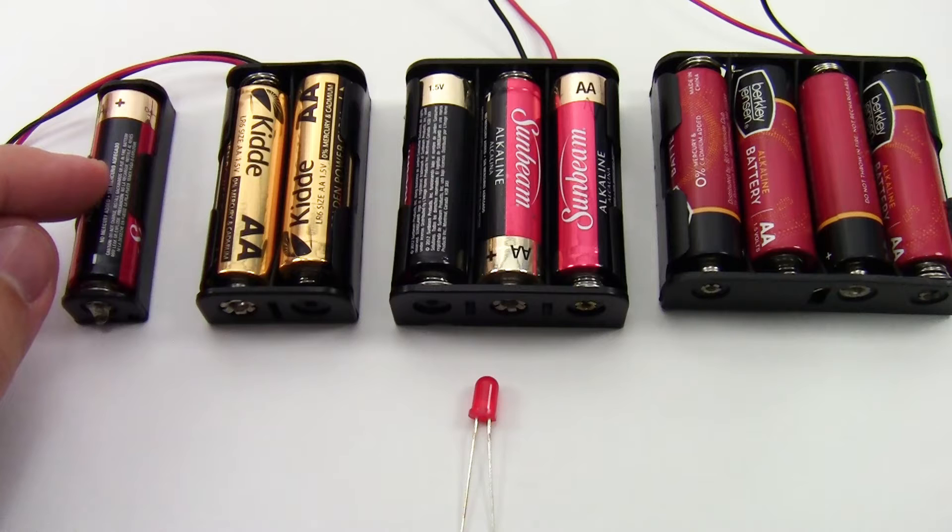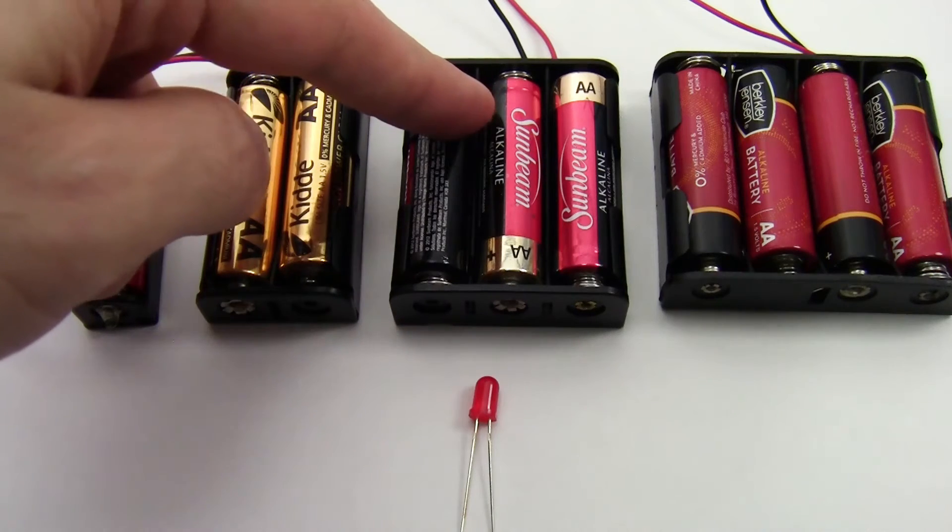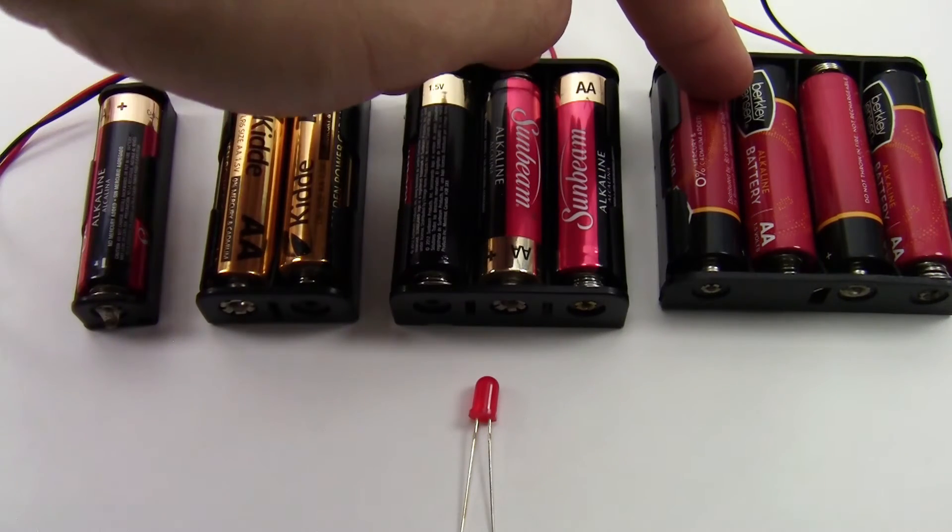A single alkaline AA battery will provide 1.5 volts. When you combine them in series the voltages add, so two of them gives you 3 volts, three of them gives you 4.5 volts, and four of them gives you 6 volts.